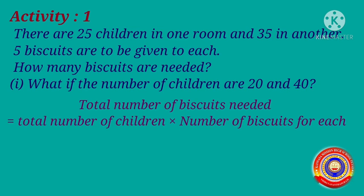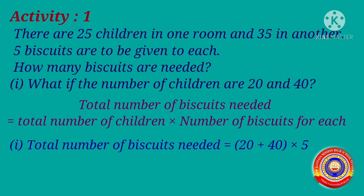Next, we have to find out the total number of biscuits needed if the number of children are 20 and 40. The total number of biscuits needed is equal to 20 plus 40 into 5. First we have to add 20 and 40, which is equal to 60. Then 60 into 5 is equal to 300 biscuits.